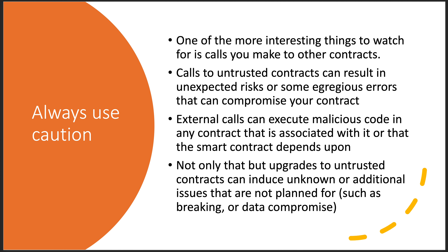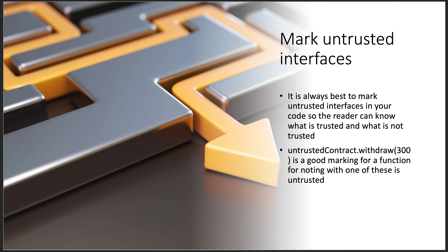You want to avoid inducing unknown or unplanned issues — such as data compromise, breaking or losing your liquidity pool, exposing your keys, or some other horrible thing. When you're writing your code, you really want to mark untrusted interfaces. Whatever language you use, however you want to do it, you want to make sure that whoever is reading the code and going through your QA process knows what is a trusted external call and what is not.